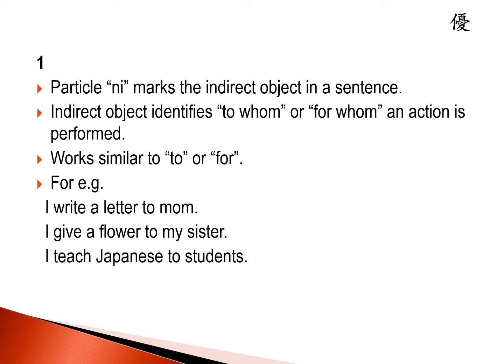Indirect object identifies to whom or for whom an action is performed. In this case it works very similar to 'to' or 'for' in English. Usually an indirect object will work in a sentence only if there is already a direct object. For example: I write a letter to mom. Here the action of writing is performed for mom, so mom is the indirect object, and letter is the direct object as it is directly receiving the writing action.